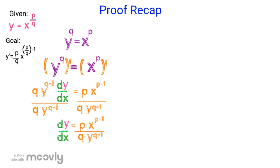Now let's do a quick recap. We're given that y equals x to the power of p over q, and our goal is to get y prime equals p over q x to the power of p over q minus 1. So we start off with our equation, which is y to the power of q equals x to the power of p. We take the derivative on each side. We want dy dx to be by itself, so we divide each side by q y to the power of q minus 1.